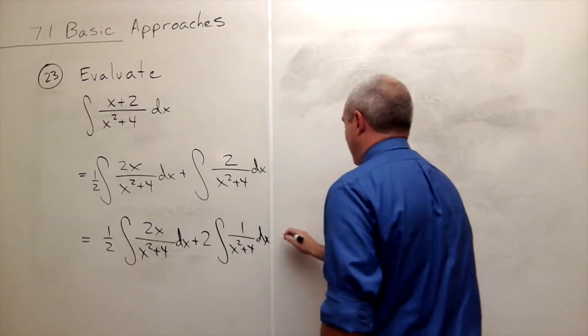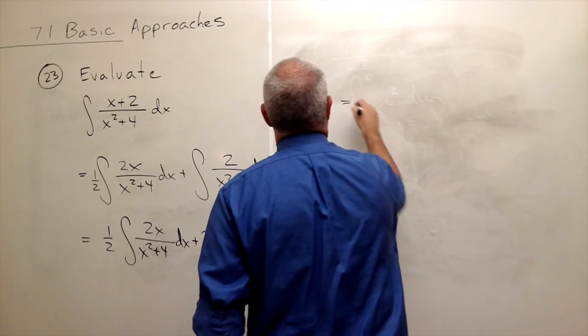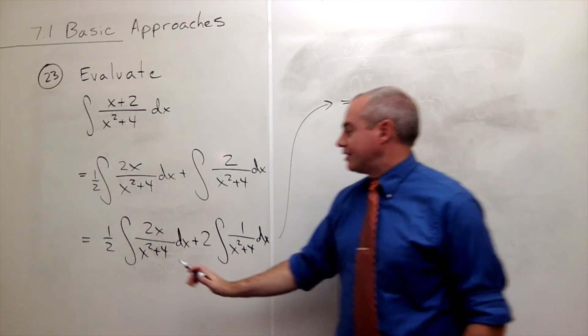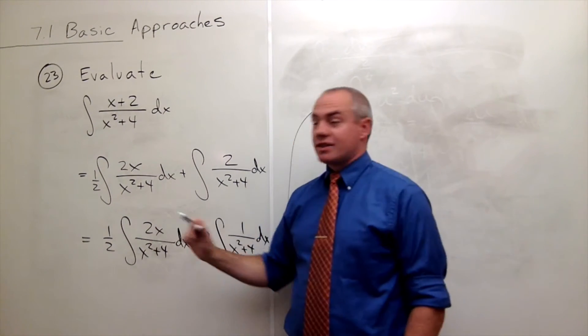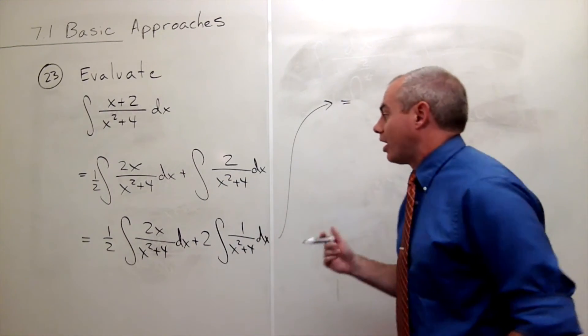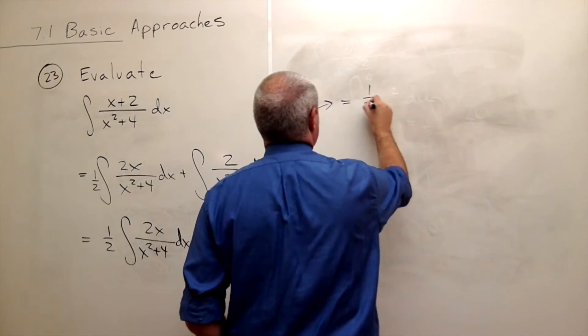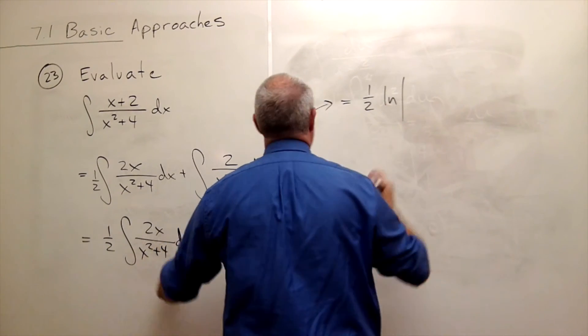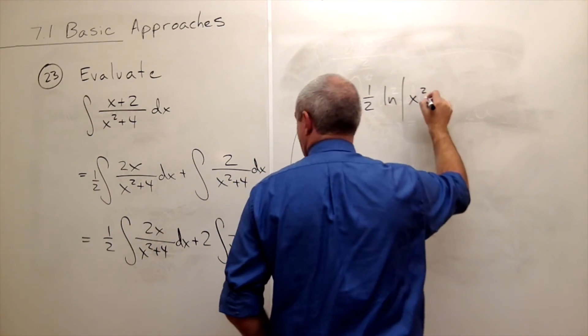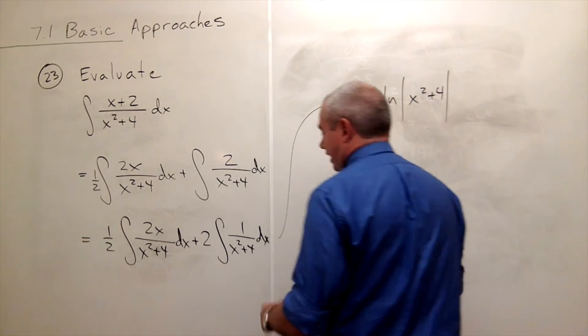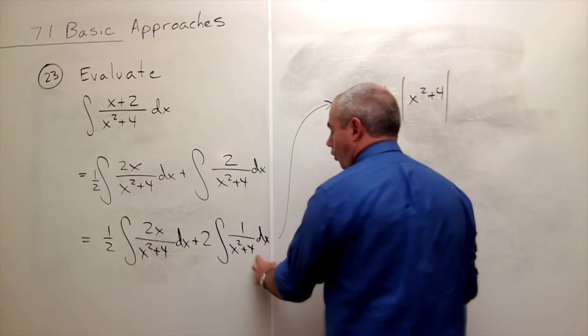Okay, so what's the first antiderivative? If I said that the derivative of the bottom was the top, and that's a perfect form for ln of what's on the bottom. So I get 1 half of ln absolute value of what's on the bottom, x squared plus 4.